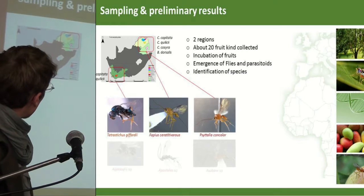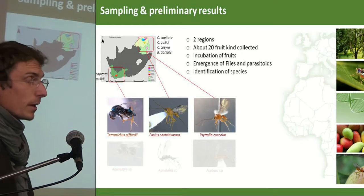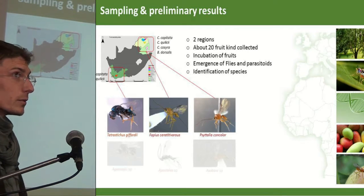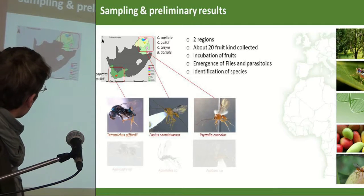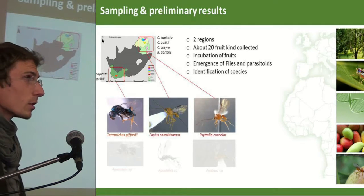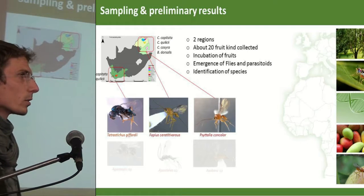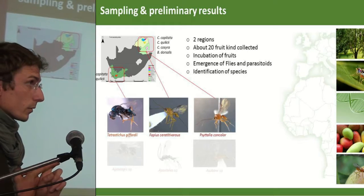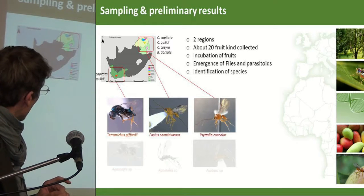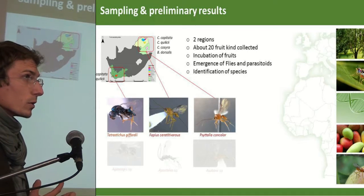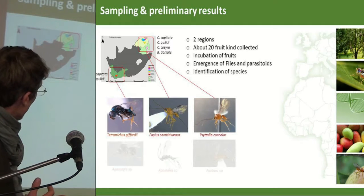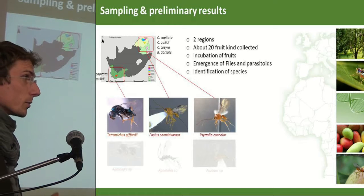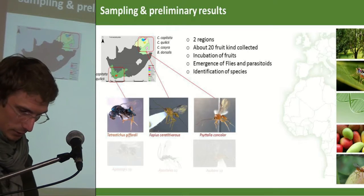We sampled mainly fruits in the Western Cape, and also received samples from the Mpumalanga and Limpopo regions. About 20 fruit types were sampled, including cultivated fruits and also non-cultivated, natural fruits. We incubated the fruits in a box and tracked the emergence of fruit fly species and parasitoids, then identified them.